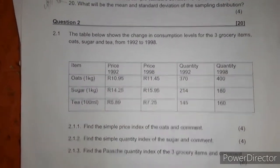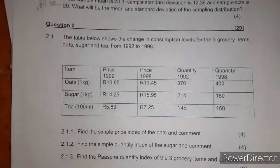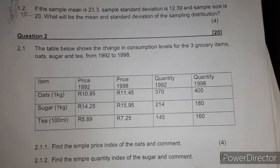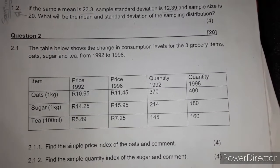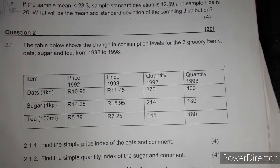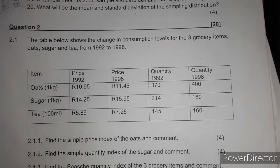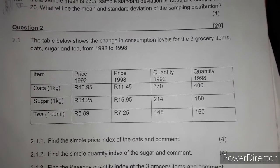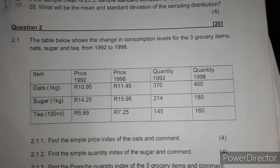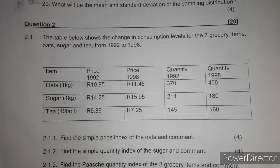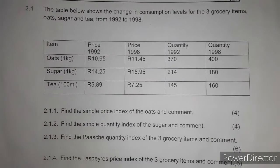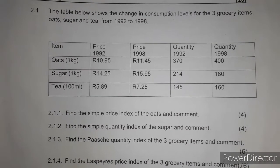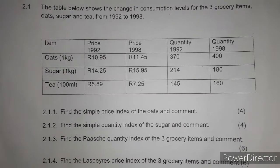We are going to do question number two. The table below shows the change in consumption levels for the three grocery items — oats, sugar, and tea — from 1992 to 1998. Question 2.1.1: find the simple price index of the oats and comment.